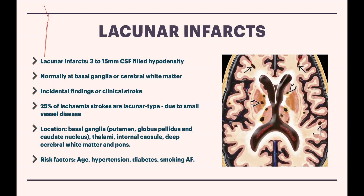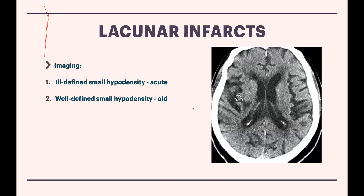Lacunar infarcts are small infarcts — three to fifteen millimeters — typically within the basal ganglia, thalamus, or brainstem. To decide whether a lacunar infarct is acute or chronic, look at the margin: fluffy, ill-defined margins suggest acute; a punched-out, clear-cut lesion suggests old or chronic infarct. When the margin is between these, it may be called subacute. This distinction can be quite subjective.